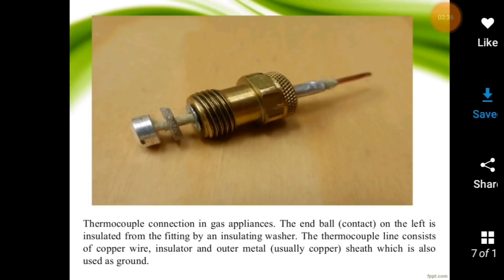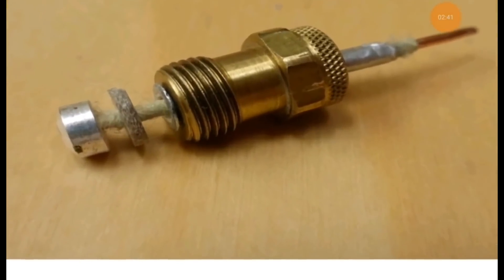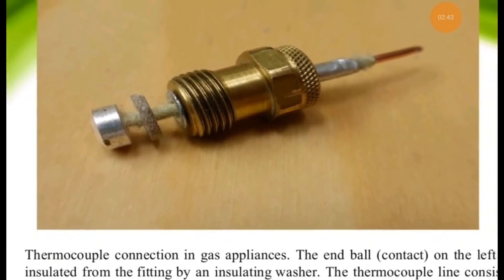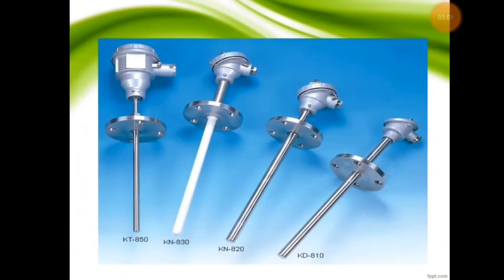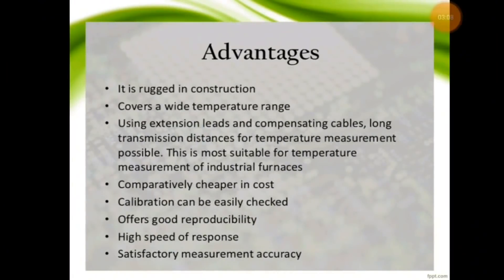These are the types and specifications: K types such as K, J, N, R, S, B, T, and E. Temperature ranges, tolerance class, and color codes are shown in this chart.